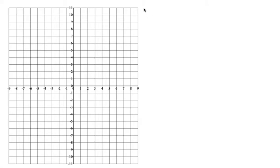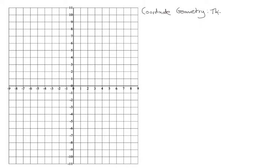Let's look at coordinate geometry. There are two aspects to coordinate geometry for Leaving Cert: coordinate geometry of the line, and coordinate geometry of the circle. We are going to look at the line.